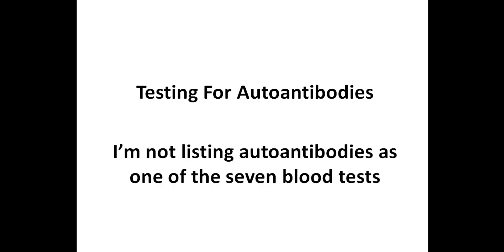Different autoimmune conditions involve different autoantibodies. For example, thyroid peroxidase and thyroglobulin antibodies are associated with Hashimoto's thyroiditis. While autoantibodies are typically used for diagnosing a specific autoimmune condition, and although I do recommend testing and retesting autoantibodies in my patients, I'm not listing them as one of the 7 blood tests in this video, as I really want to focus on markers that go beyond diagnosing autoimmunity.